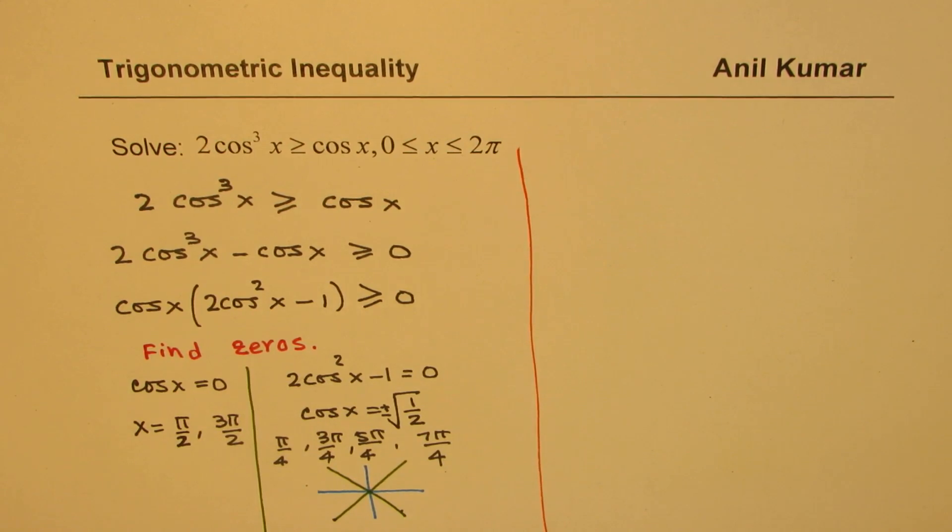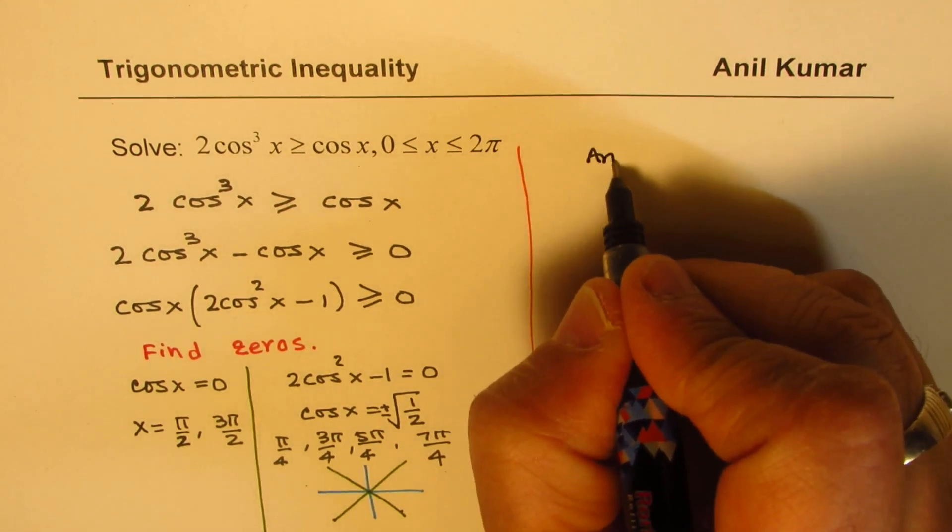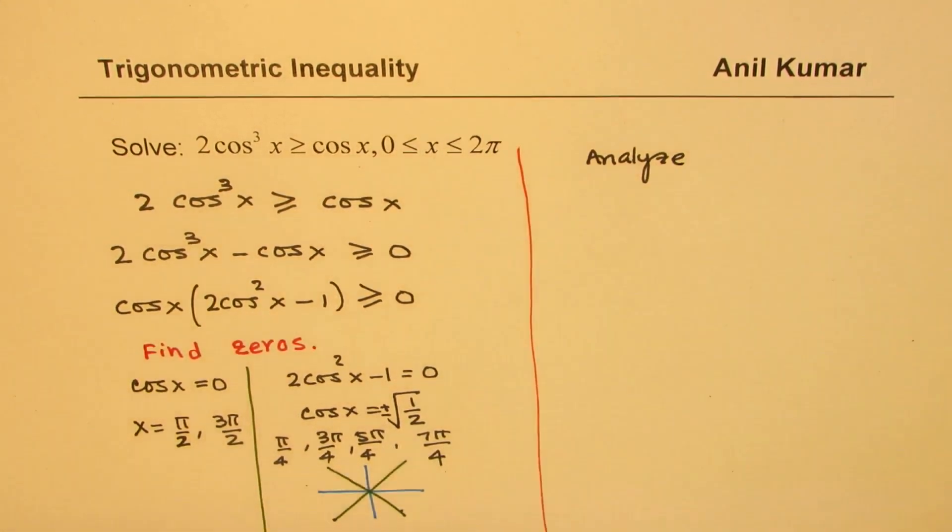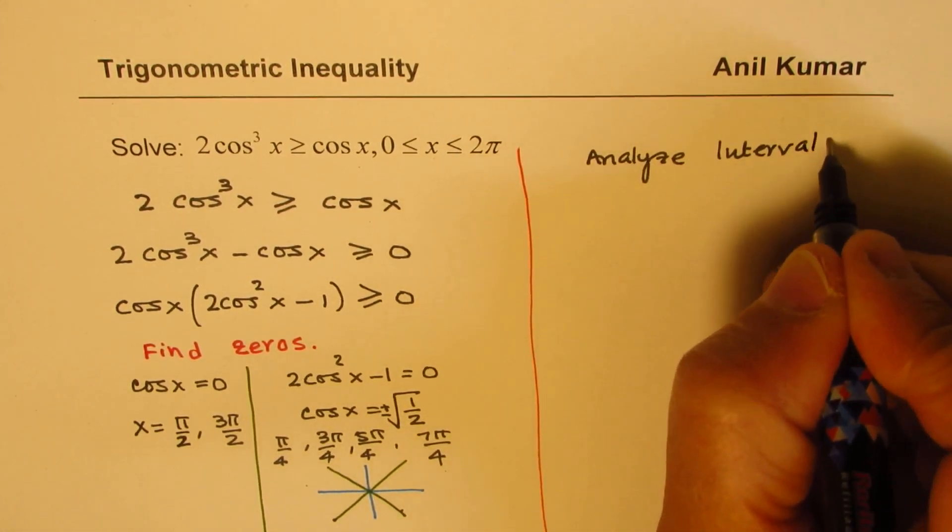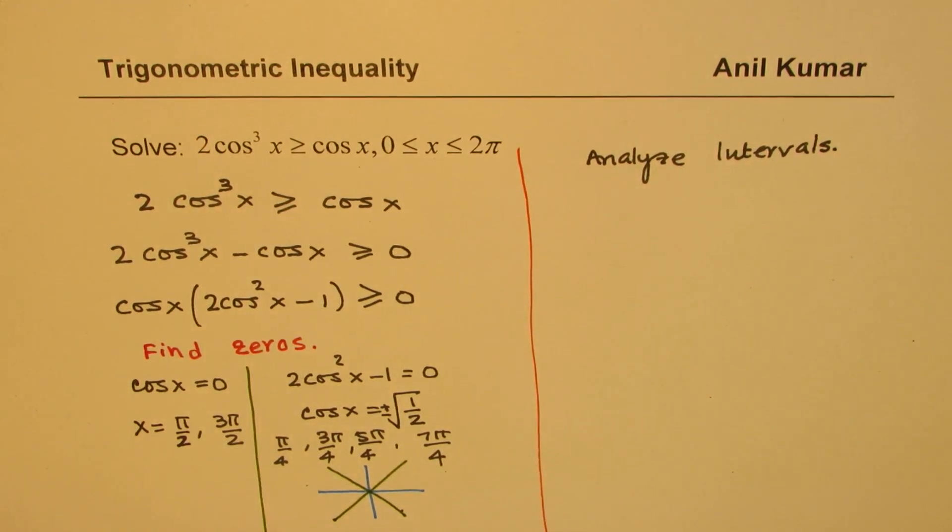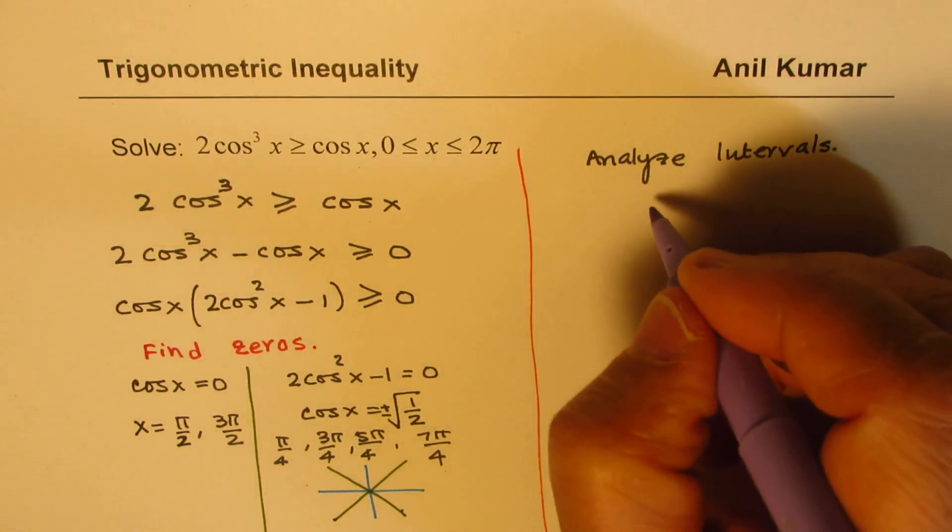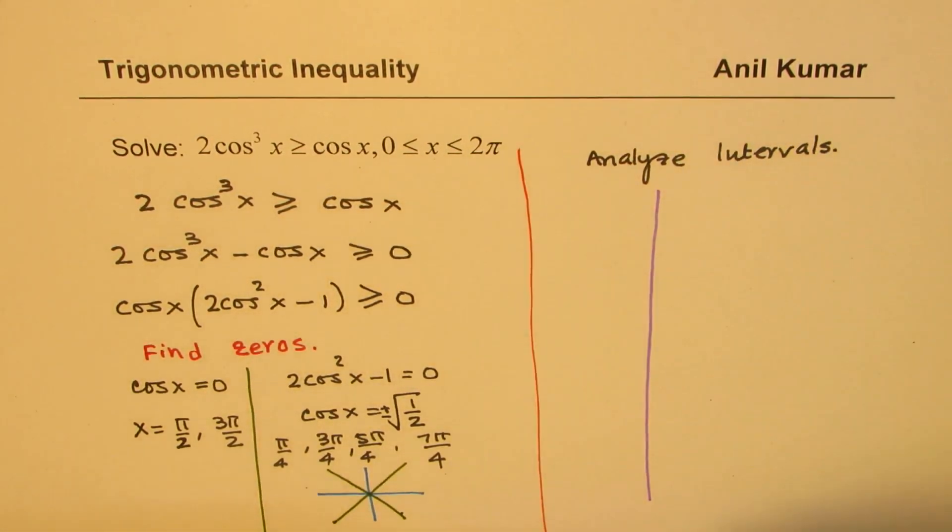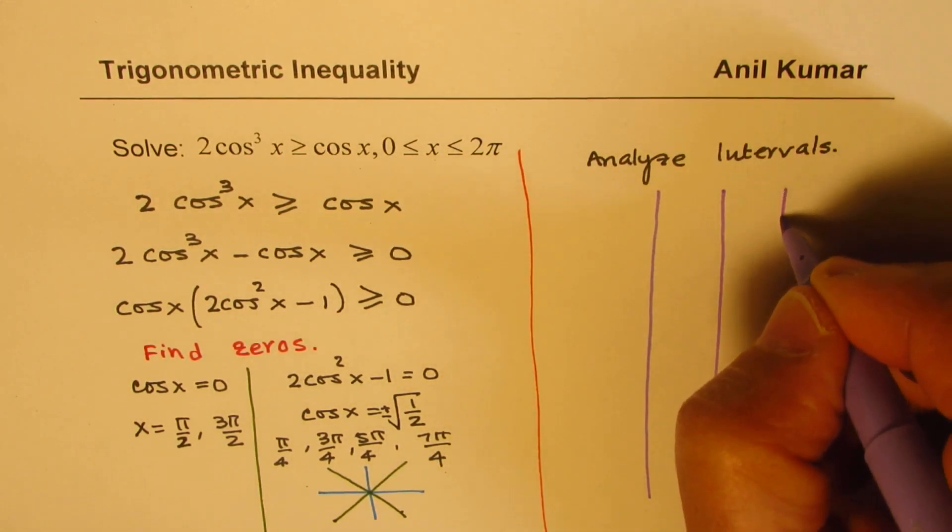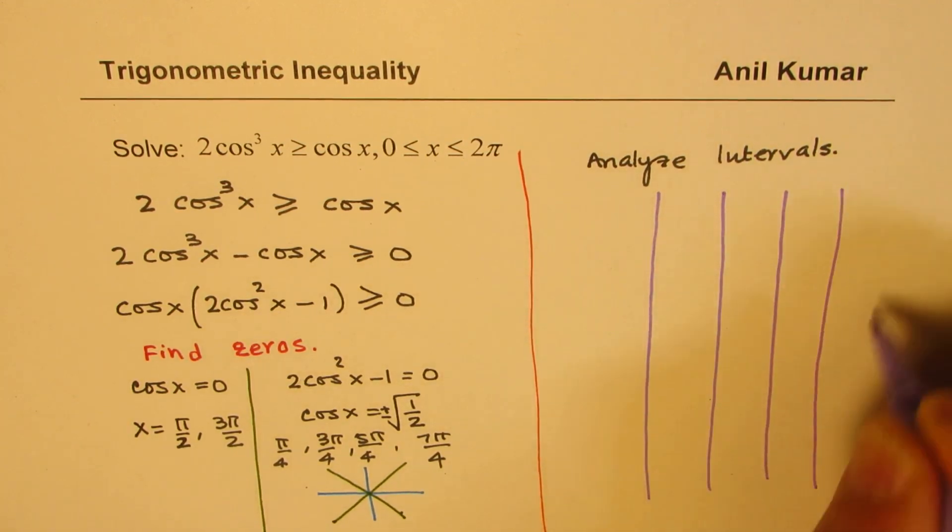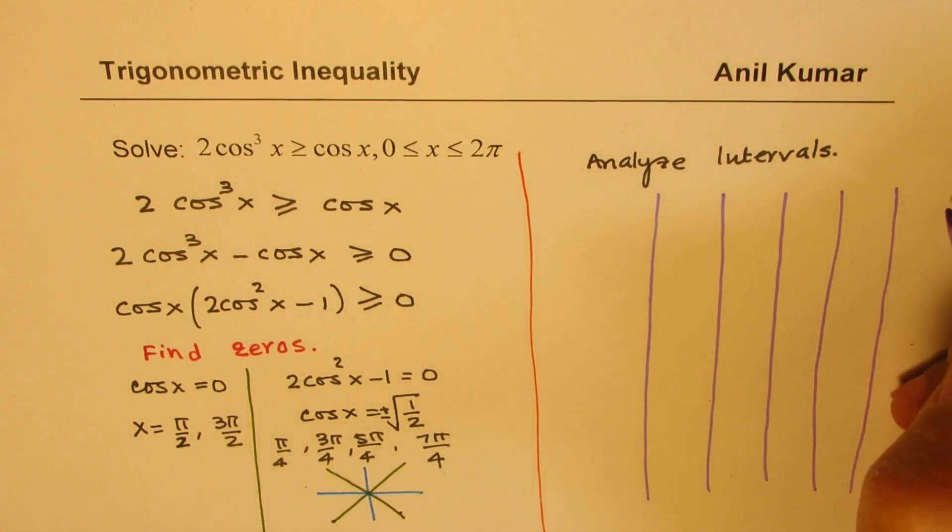To solve the inequalities, we should make a table and analyze intervals. So let's make a table and analyze the intervals. We have 6 zeros. So let me write down these lines. We'll write positive and negative for each function.